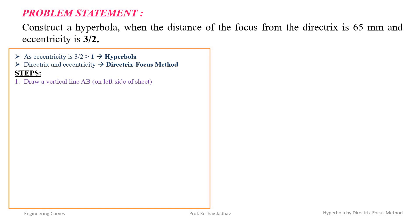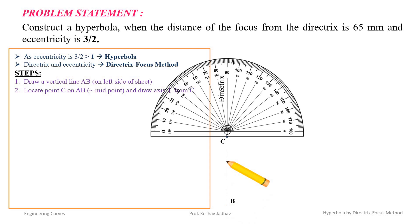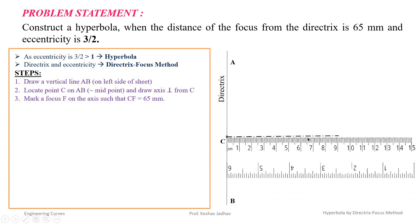First we have to draw a vertical line AB which is the directrix. Then we have to locate point C approximately at the midpoint of AB. From point C we have to draw a horizontal axis perpendicular to directrix AB. In the problem statement it is given that the focus from the directrix is 65 mm, so we have to locate the focus F at 65 mm from C and mark point F.